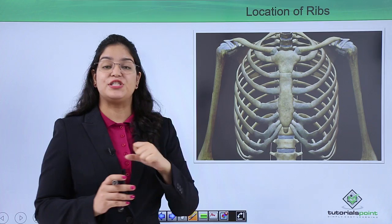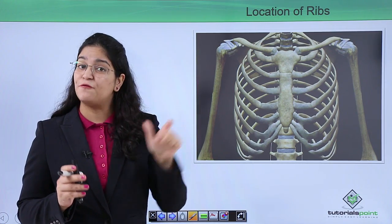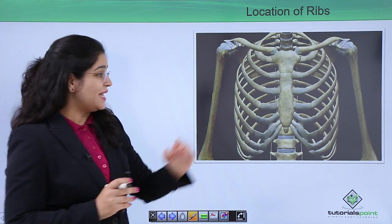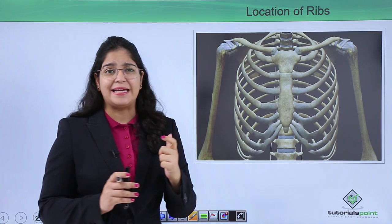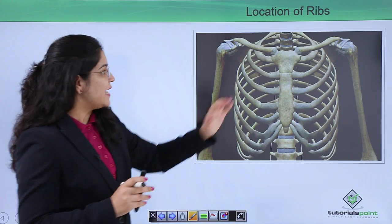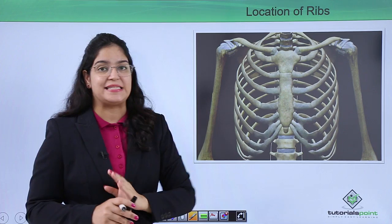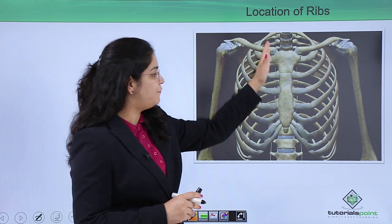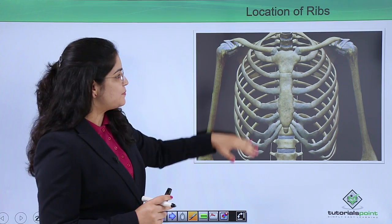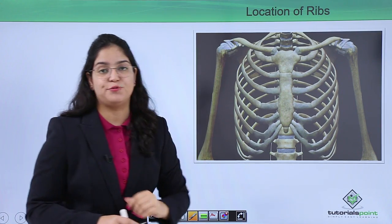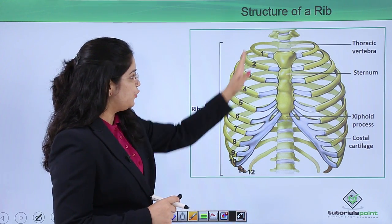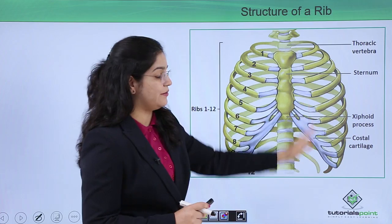The main function of the ribs is to protect the vital organs of our body. Our ribs form a structure called a rib cage. At the back, the rib cage contains the vertebral column, and at the front it contains the sternum. The rib cage is located between the neck and the abdominal region.